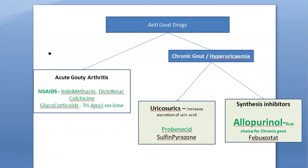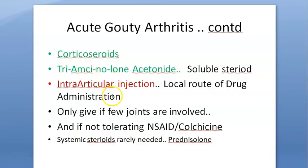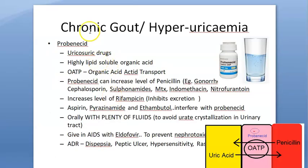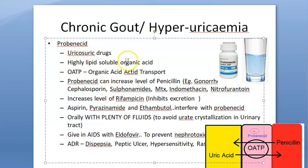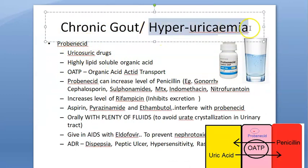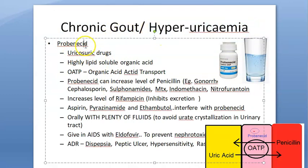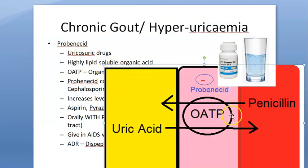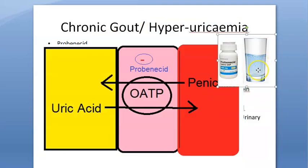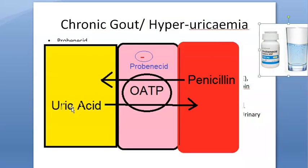Corticosteroids such as triamcinolone are also used for acute gout. For chronic gout or hyperuricemia or gouty arthritis, you give probenecid. Probenecid should be taken with a lot of water — it helps with uric acid excretion in the urine.